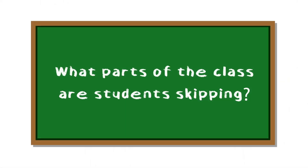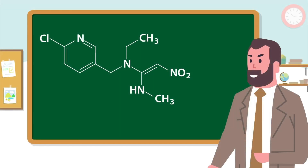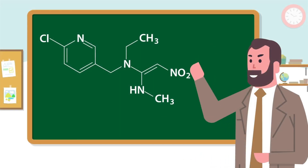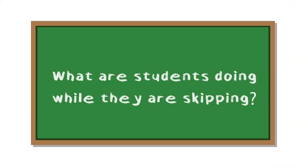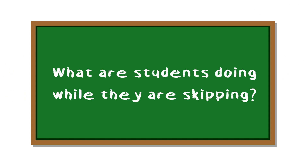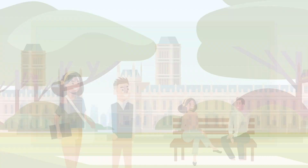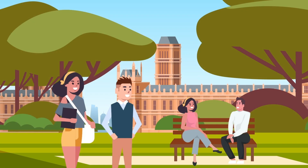What parts of the class are they skipping? Are certain parts more difficult than others? What is it about those parts of the class? What are they doing while they are skipping? Can this tell us something about the student's motivation?